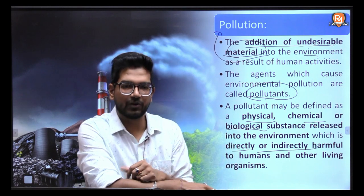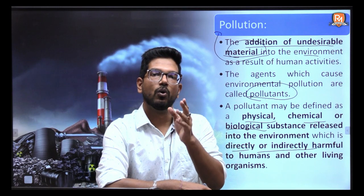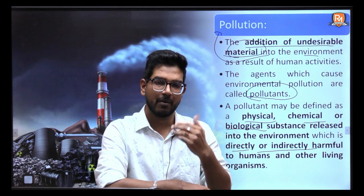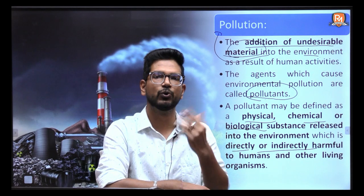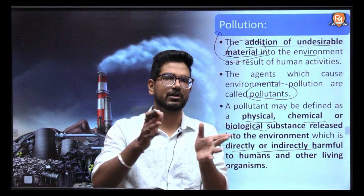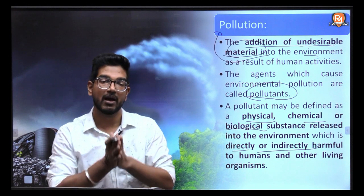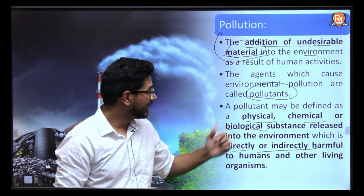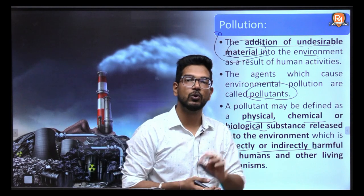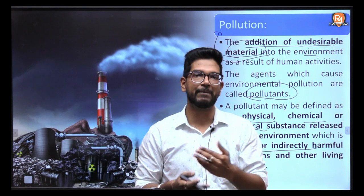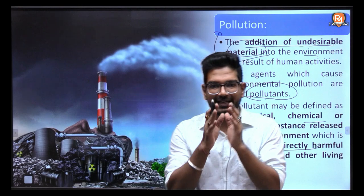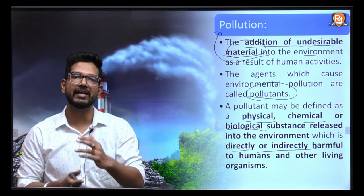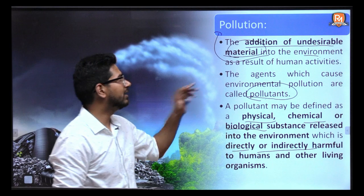For example, in water, certain chemicals like urea mix in and they are not directly impacting human health. But bio-magnification and bio-accumulation can lead to an indirect impact on human health. So a pollutant can be directly or indirectly impacting human health.